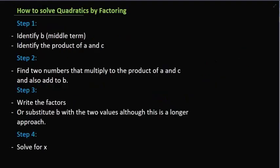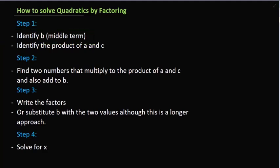To solve a quadratic equation by factoring, the first step is to identify the middle term — the middle term meaning b. And then you identify the product of a and c, which simply means to multiply the a and c coefficients.